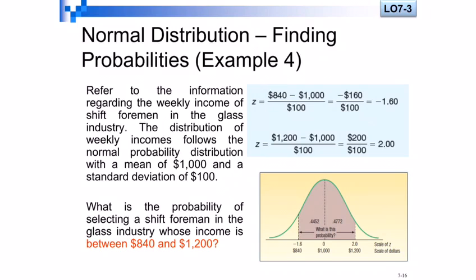When you solve it, put it in the formula. You will reach two values: minus 1.6 and 2. You need the distance between these two. Go to the Z-distribution table. You find the value for minus 1.6, you find the value for 2.